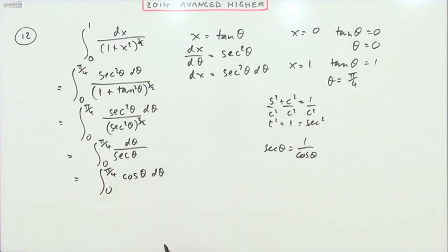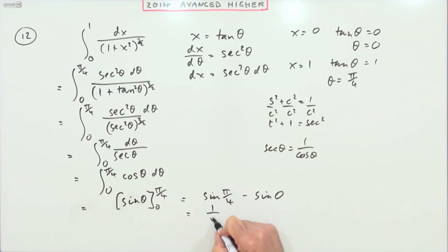So that will integrate back to sin θ to be evaluated at 0 and π upon 4. So that will be sin π upon 4 minus sin 0. Sin π upon 4 is 1 upon root 2, sin 0 is 0.